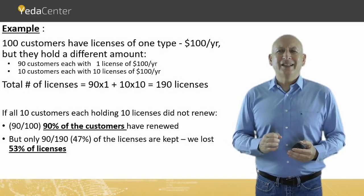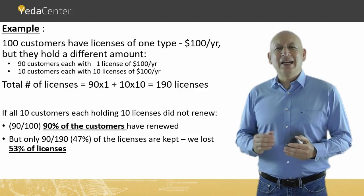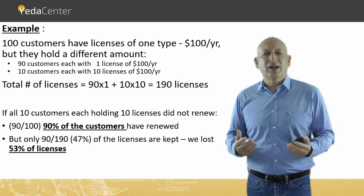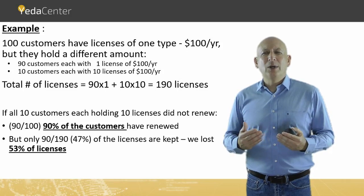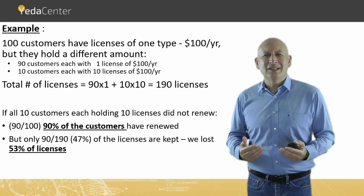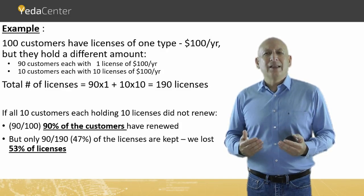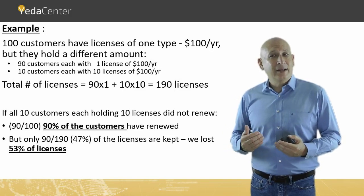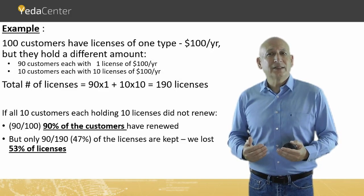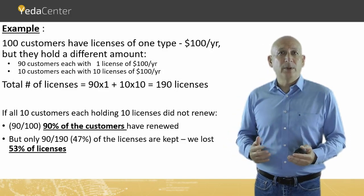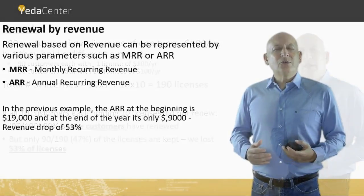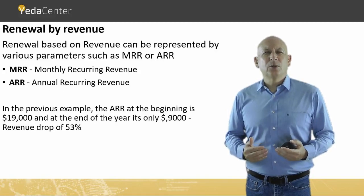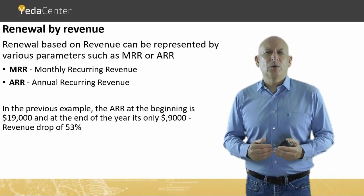If all those 10 customers, each holding 10 licenses, did not renew, the result is that 90% of customers renewed, but only 90 out of the 190 licenses renewed — a loss of 53% of licenses. This helps us identify that there is a problem. This shows we need another parameter, and it is the third we will discuss: renewal based on revenue.